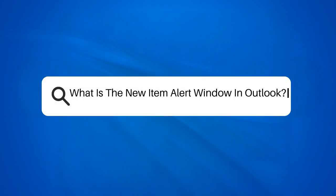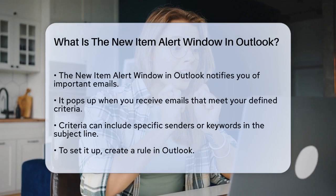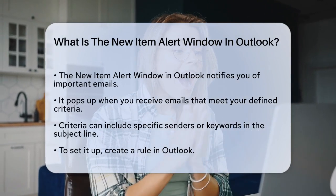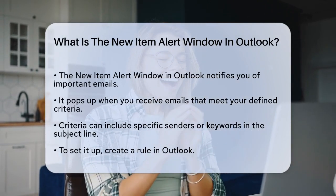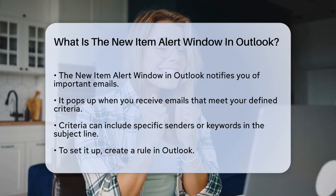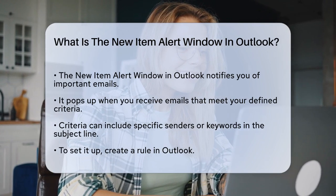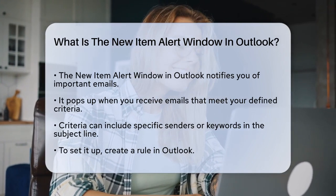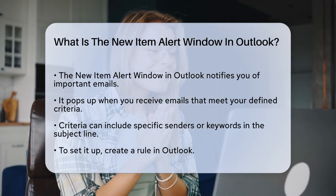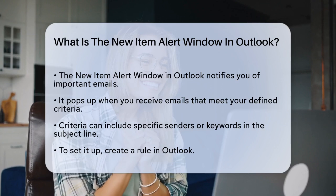What is the New Item Alert window in Outlook? If you're wondering how to stay on top of important emails in Outlook, you might have heard of the New Item Alert window. The New Item Alert window is a pop-up notification that appears on your screen when you receive a new email that matches specific criteria you've set up — such as emails from a particular sender, or emails with certain keywords in the subject.